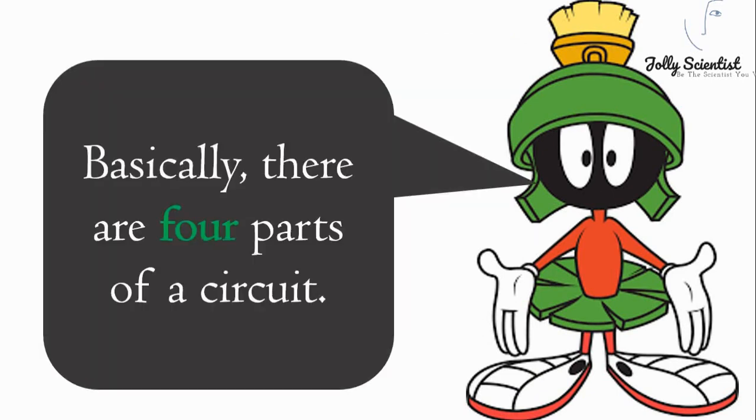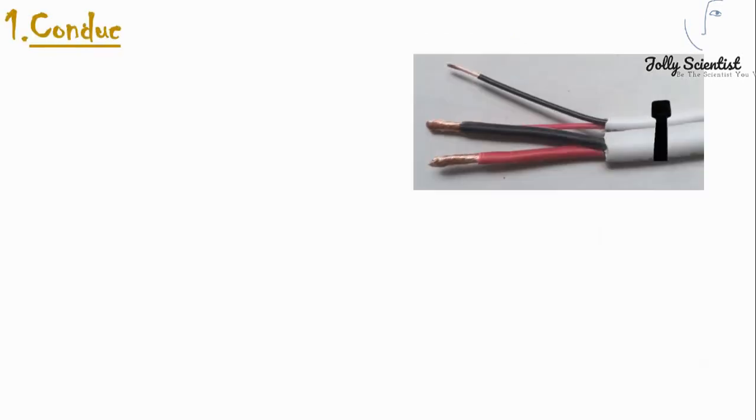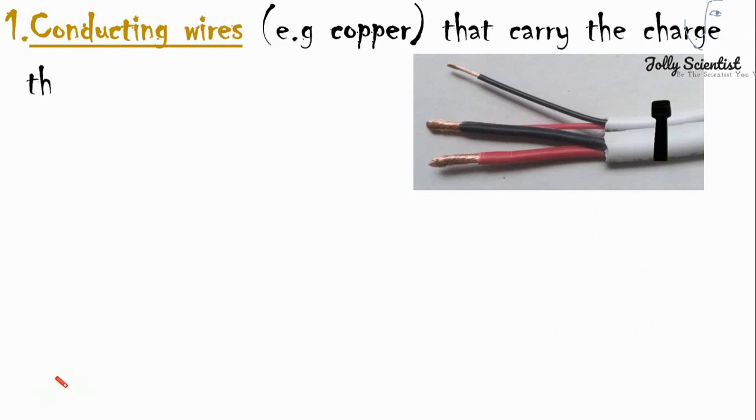Basically, there are four parts of a circuit. First is the conducting wire, such as copper. They carry charges throughout the entire circuit.